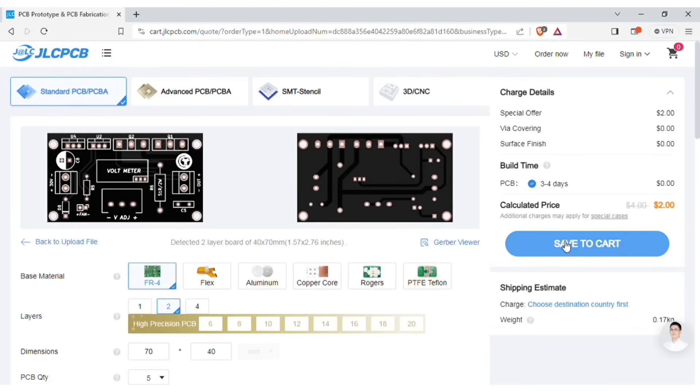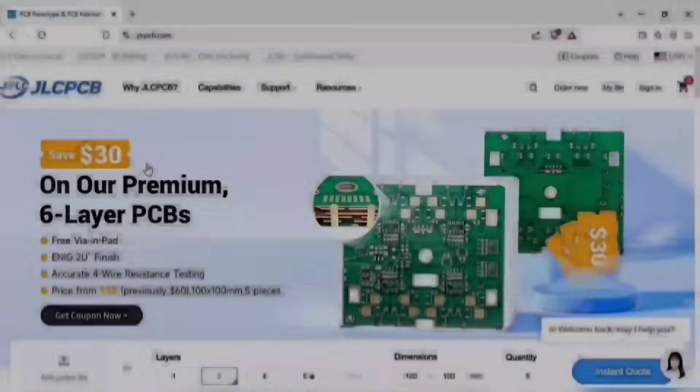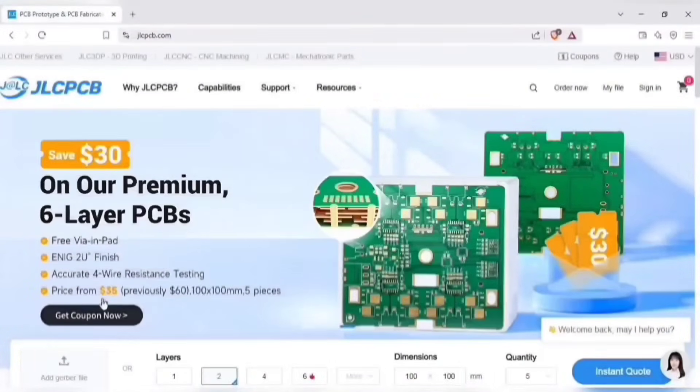And then you can save to the cart for the checkout process. Also don't miss JLCPCB's 6 layer PCB special. Get $30 off with a coupon and enjoy top quality 6 layer PCBs, plus 2 ENIG finish, and no engineering fees for vias in pads.